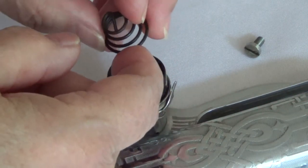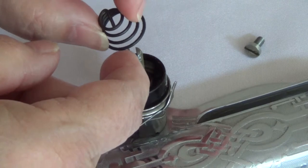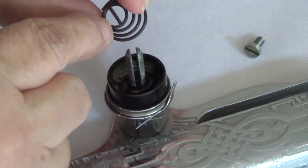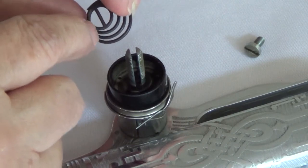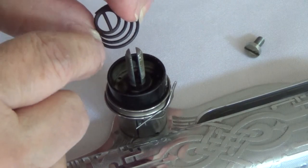This is called a beehive spring. Some people call it a coil. You'll notice that the line in the middle is attached to a cup shape on the bottom.